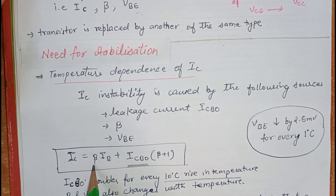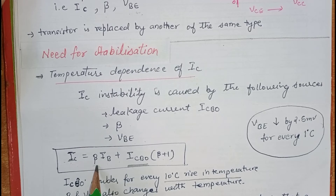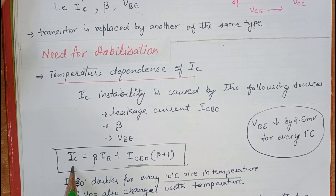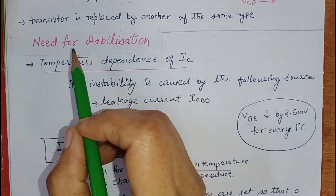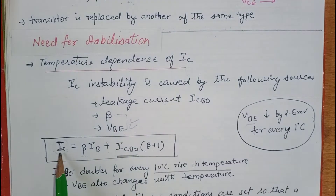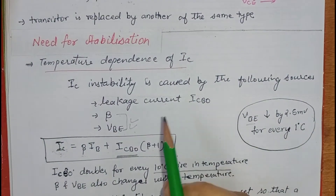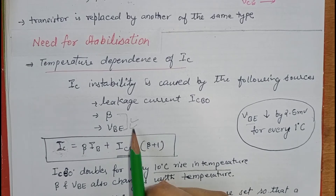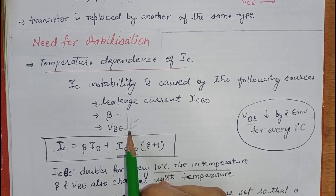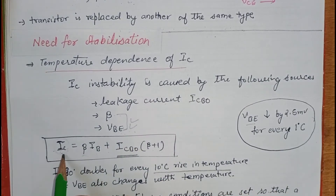β is also dependent on temperature. As temperature increases, β also increases, which further increases IC or the collector current. Due to the increase of this collector current, the overall temperature of the transistor increases. The second factor is when we replace the transistor with another one of the same type — IC also changes, because two transistors of the same type don't have the same parameters. β and VBE of two transistors of the same type are not exactly the same, which is why IC changes.